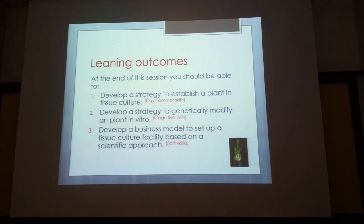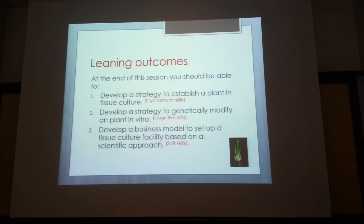The learning outcome requires you to establish a strategy for setting up a plant in tissue culture — knowing how to sterilize a plant, what chemicals are needed, how to prepare media, and how to convert the plant into callus and differentiate it into shoots and roots.